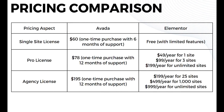Moving on to the pricing comparison. For a single-site license, Avada offers a one-time purchase at $60 with six months of support, while Elementor is offered for free with limited features. For Pro licenses, Avada offers $78 as a one-time purchase with 12 months of support, while Elementor offers $49 per year for one site, $99 per year for three sites, and $199 per year for unlimited sites. For agency licenses, Avada offers $195 as a one-time purchase with 12 months of support, while Elementor offers $199 per year for 25 sites, $499 per year for 1,000 sites, and $999 per year for unlimited sites.